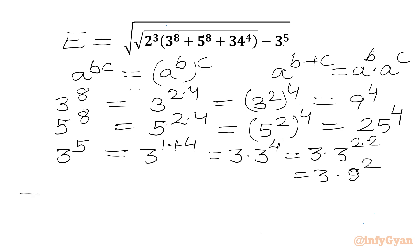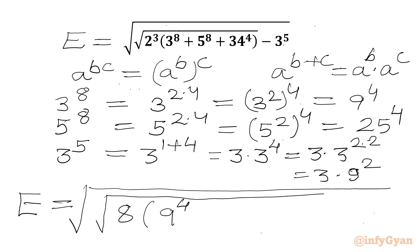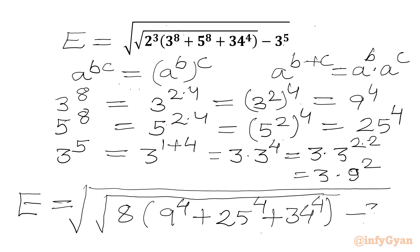So I will write our expression E equals the square root of the square root of 8 times, in the bracket: 3^8 is now 9^4, plus 5^8 is now 25^4, plus 34^4, minus 3^5, which I write as 3 times 9².